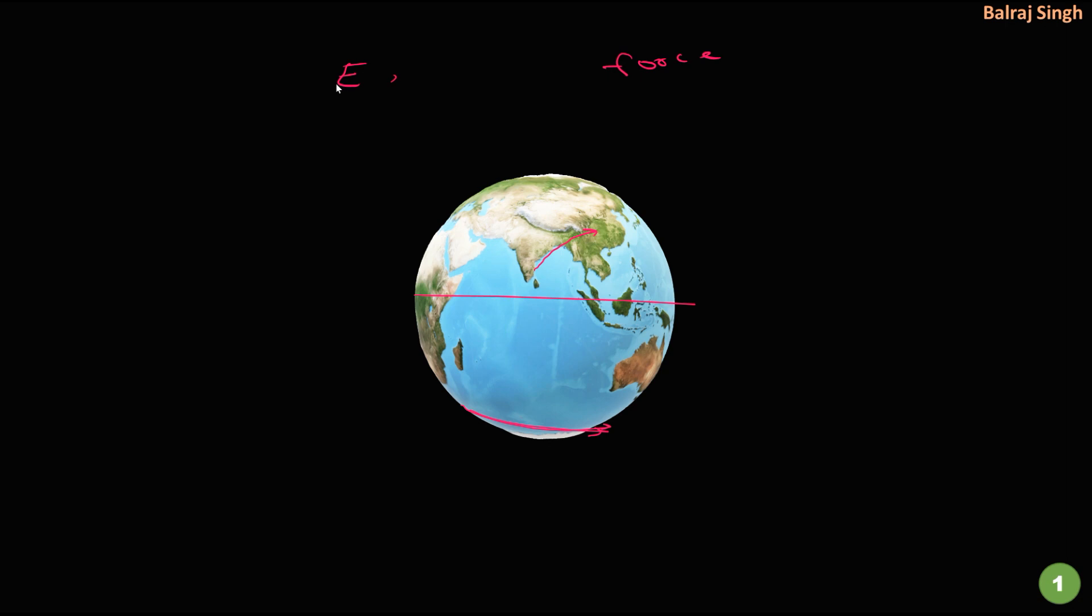The Coriolis effect only affects the direction of the moving body and not the speed, because it is not an actual force. It is just an illusionary force or a pseudo force. This Coriolis is maximum at the poles and zero at the equator, and we will look at why this is so towards the end of the video.